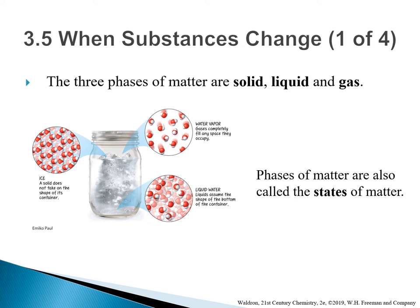Let's talk about when substances change. There are three phases of matter: solid, liquid, and gas — also called the states of matter. The most common matter that demonstrates this is water. When water freezes, we call it ice — the solid form. A solid does not take on the shape of the container. When ice melts, it turns into liquid water, which assumes the shape of the bottom of the container. If you heat up the water, it eventually turns into steam or water vapor — the gas state — which completely fills any space it occupies.